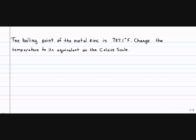The next problem. The boiling point of the metal zinc is 787.1 Fahrenheit. Change the temperature to its equivalent on the Celsius scale. And the relationship between Celsius temperature and Fahrenheit temperature is used in a formula. It is C equals 5 times Fahrenheit minus 32 divided by 9. So if the Fahrenheit is 787.1, that's what I'm going to substitute in for F.